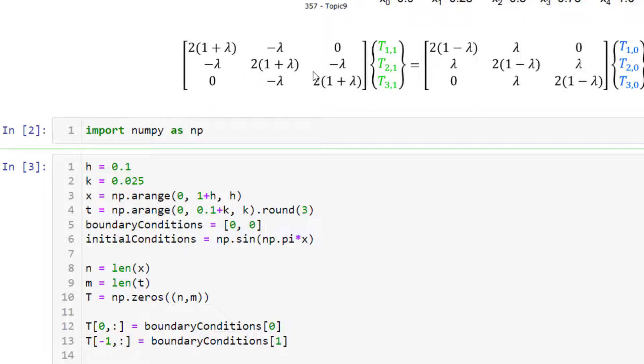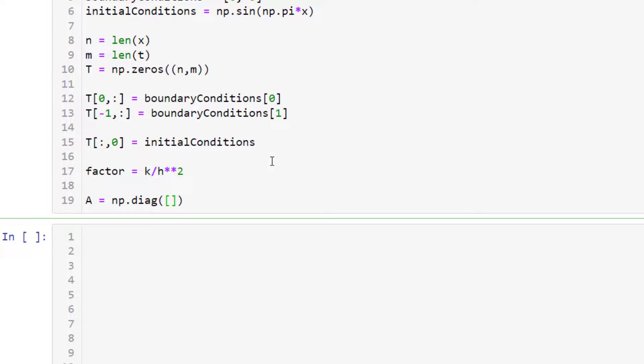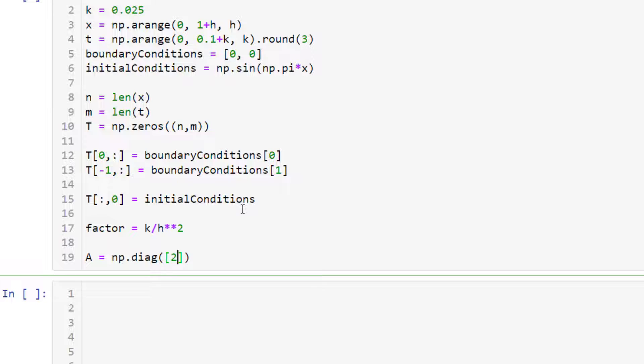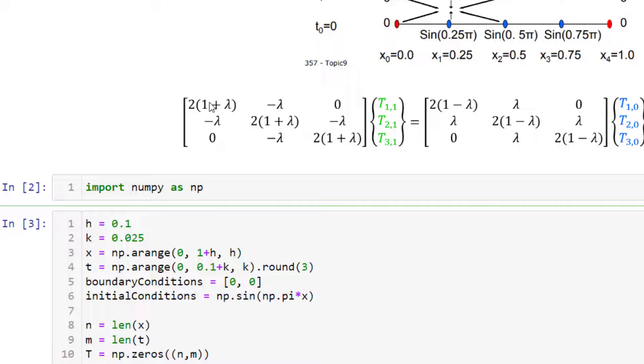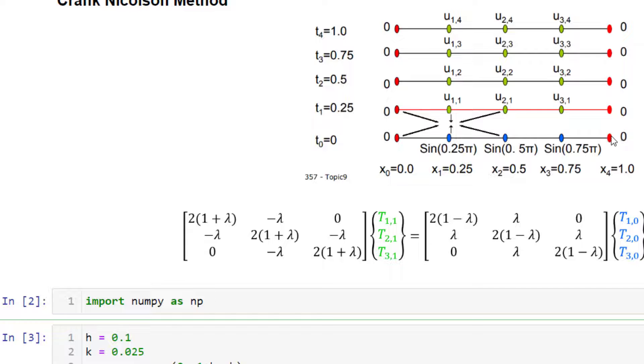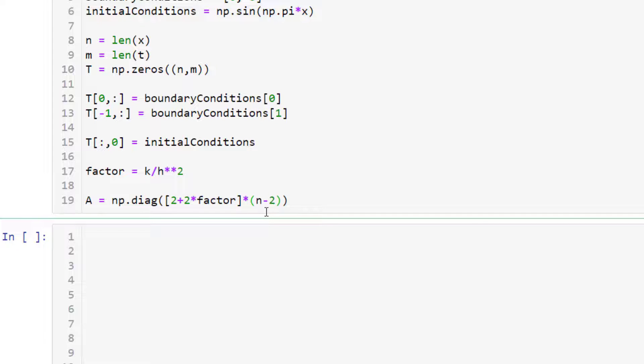We already covered how to create these diagonal matrices in the previous video. I'll just use the same technique over here. We'll have the A matrix as np dot diag. And we just have to provide it with the factor. So 2, 1 plus lambda. That will be 2 plus 2 lambda. 2 plus 2 times factor. Now if you multiply a list with a number, it will repeat the same element inside the list n times, for example. But if you look at the diagonal element here, you can see that you should have 3 terms. 1, 2, 3. Although your n in this particular case is 1, 2, 3, 4, 5. This one should only have 3 terms. So we'll do n minus 2. The diag function will put this on the main diagonal.